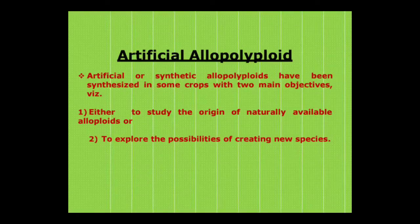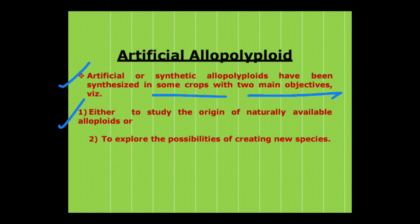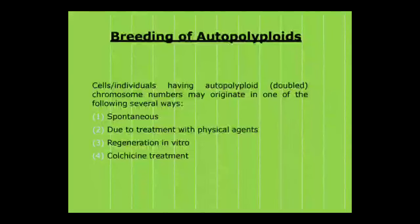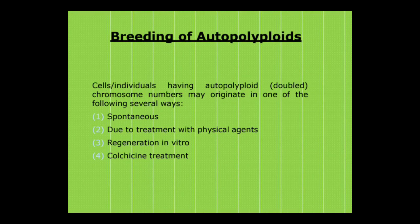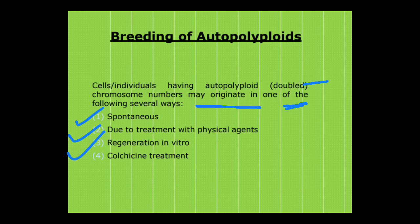Artificial or synthetic allopolyploids have been synthesized in some crops with two main objectives: either to study the origin of naturally available allopolyploids, or to explore possibilities of creating new species. Breeding of autopolyploids involves cells where chromosome numbers are doubled, which may originate spontaneously, through treatment with physical agents, regeneration in vitro, or colchicine treatment.